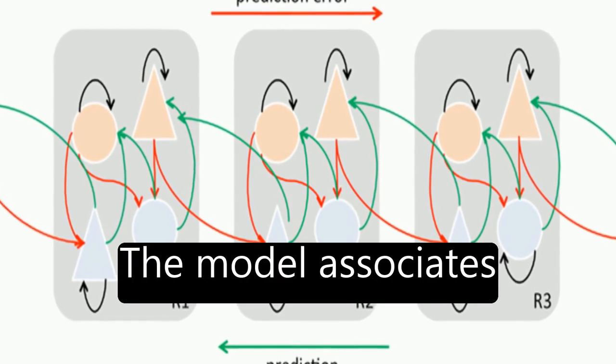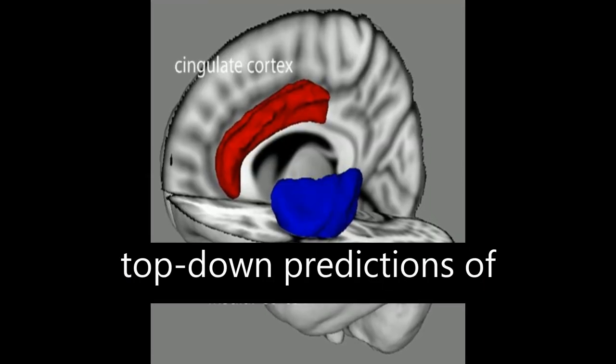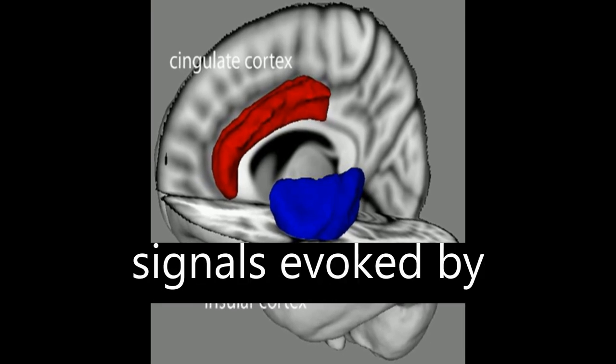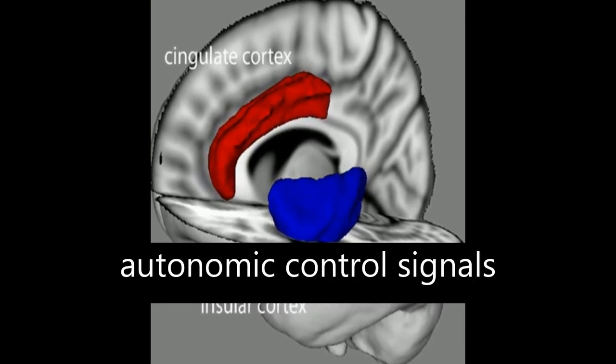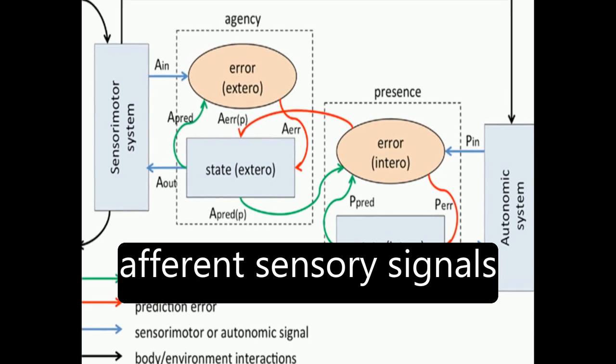The model associates presence with successful explaining away by top-down predictions of informative interoceptive signals evoked by autonomic control signals and visceral responses to afferent sensory signals.